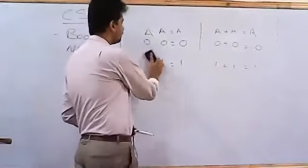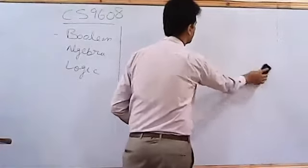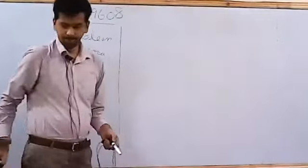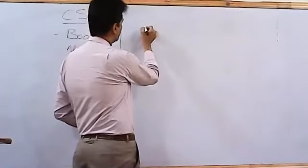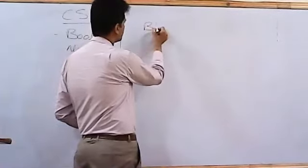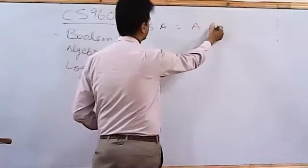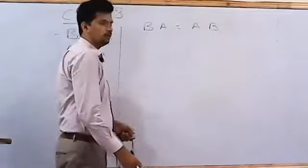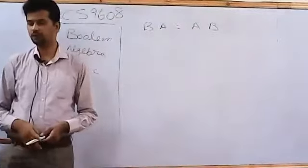Then you have your commutative property. The multiplicative part of that was B dot A equals A dot B. If you want to prove that, you can go on and make a truth table of that and prove that.